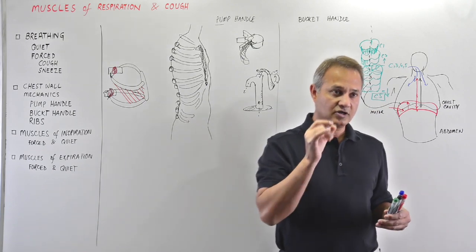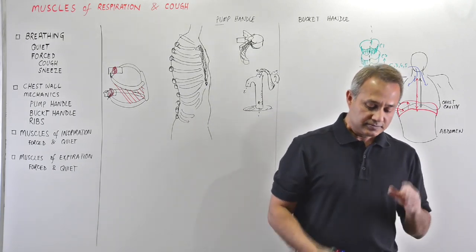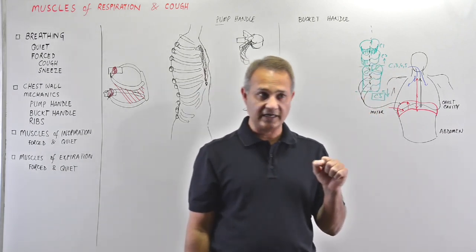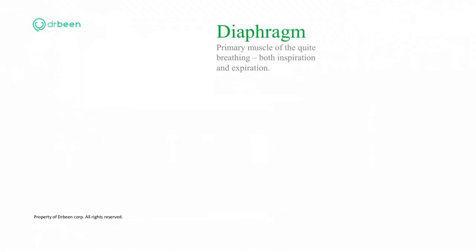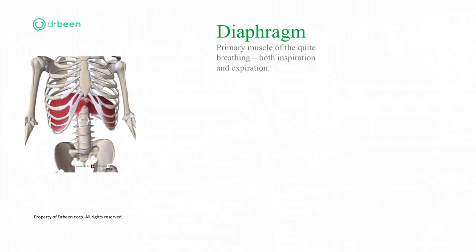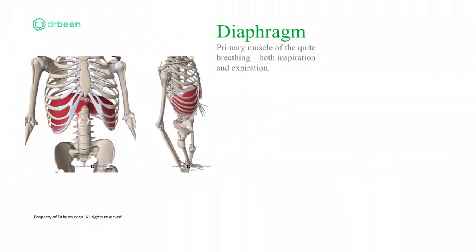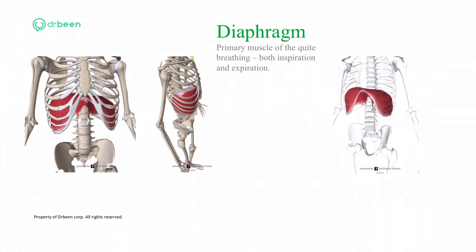Summary of the diaphragm: inspiration is active contraction, expiration is passive. That is the quiet breathing movement. Looking at the diagram, the diaphragm is the primary muscle of quiet breathing — both inspiration and expiration. It sits between the abdominal and chest cavity, dome-shaped like an inverted balloon. When contracted, it descends downward, increasing the chest cavity size.